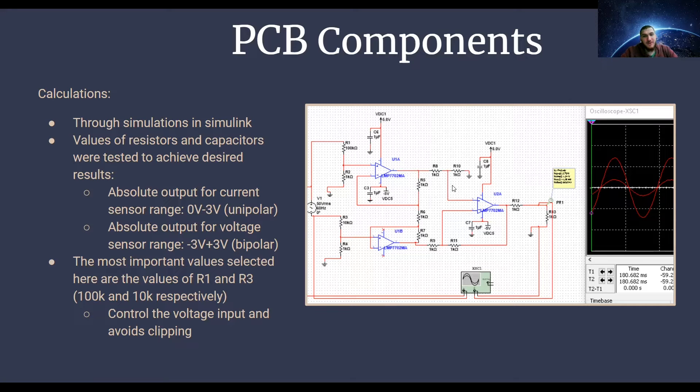The values were the basic values, so we started with a thousand ohms for most of the resistors, and then the two values for the resistors that were changed with the voltage dividers, where we changed them to 100k and 10k, doing a 10 to 1 ratio for the voltage divider.